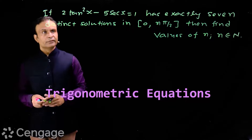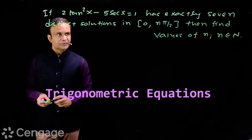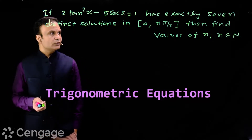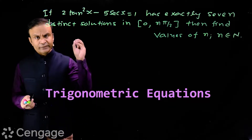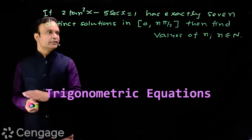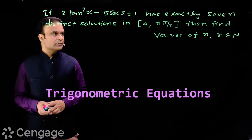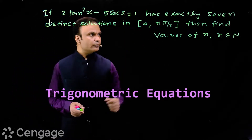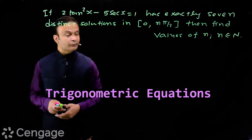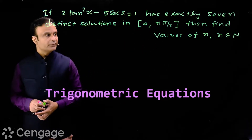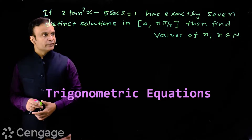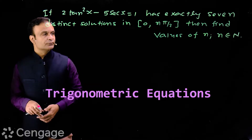We have this equation: if 2tan²x minus 5sec x is equal to 1 has exactly 7 distinct solutions in the closed interval 0 to nπ/2, then find the values of n, where n belongs to the set of natural numbers.